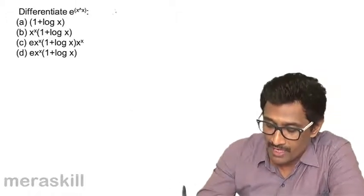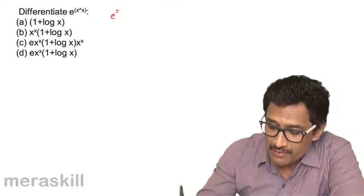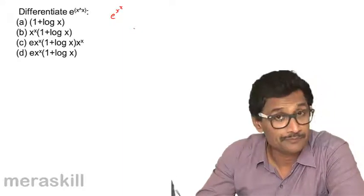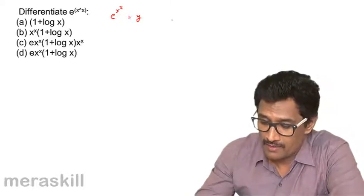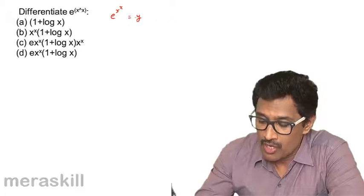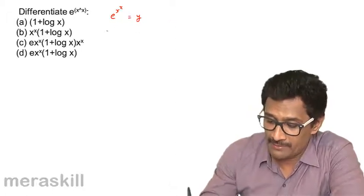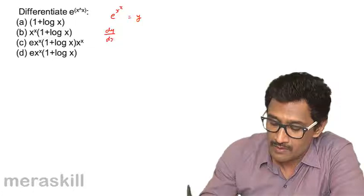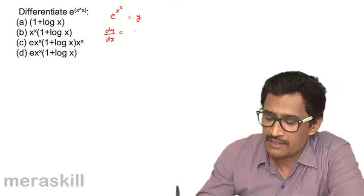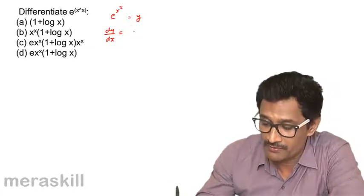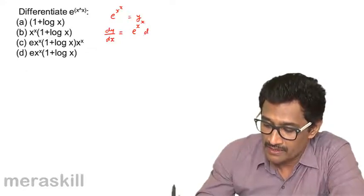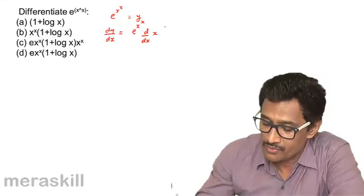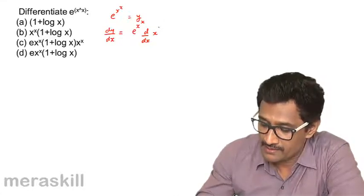Now we have y equals e raised to x raised to x. To find dy/dx, we apply the chain rule: it becomes d/dx of e^(x^x) times the derivative of x^x, so dy/dx equals e^(x^x) times d/dx(x^x).